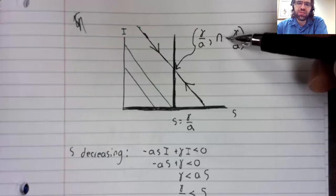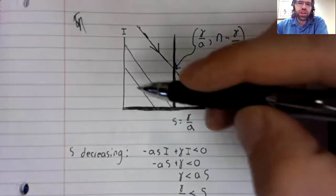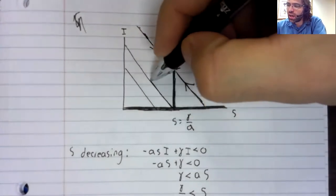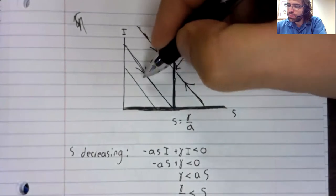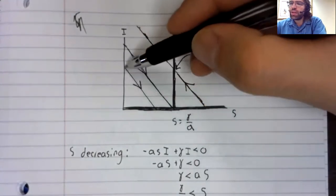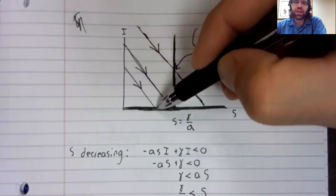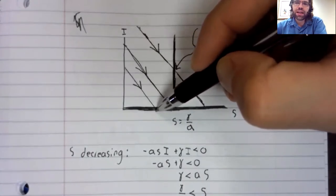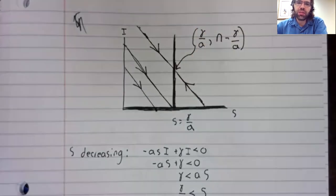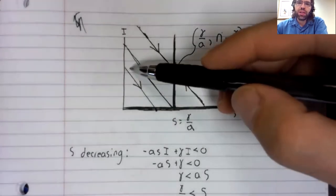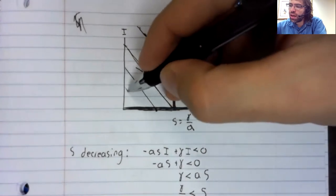So what we expect as time passes is that we'll settle into a fixed point where some people are always sick. The disease will persist in the population. The only exception is that if we start below this line, then when we follow the trajectories, we hit a fixed point on the S axis. And when that happens, the disease is eliminated.